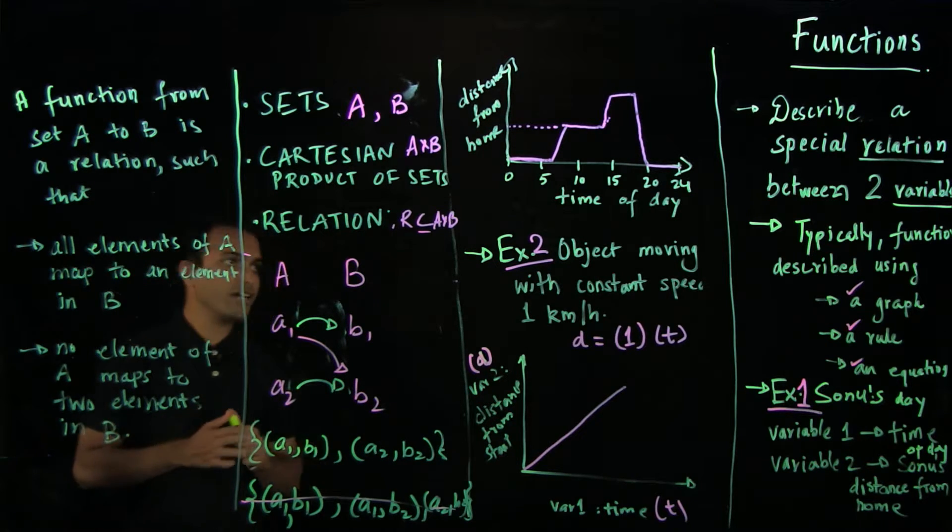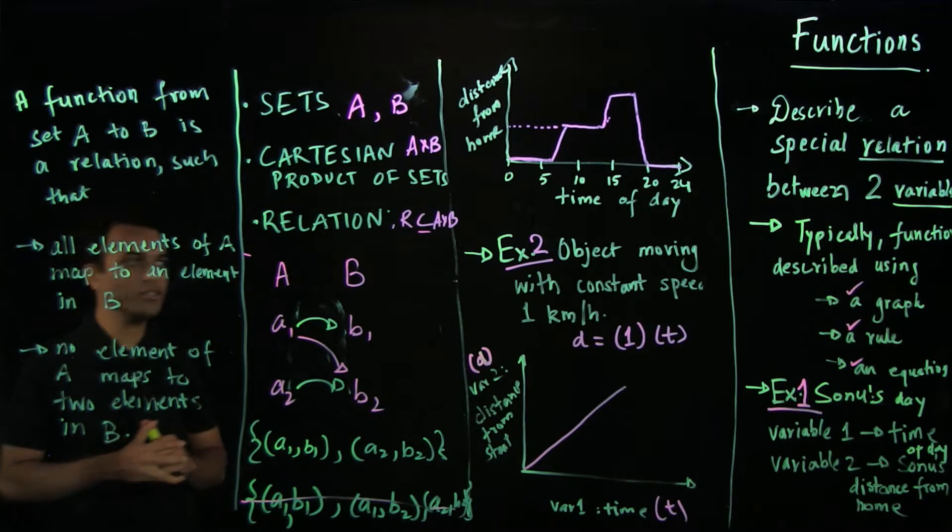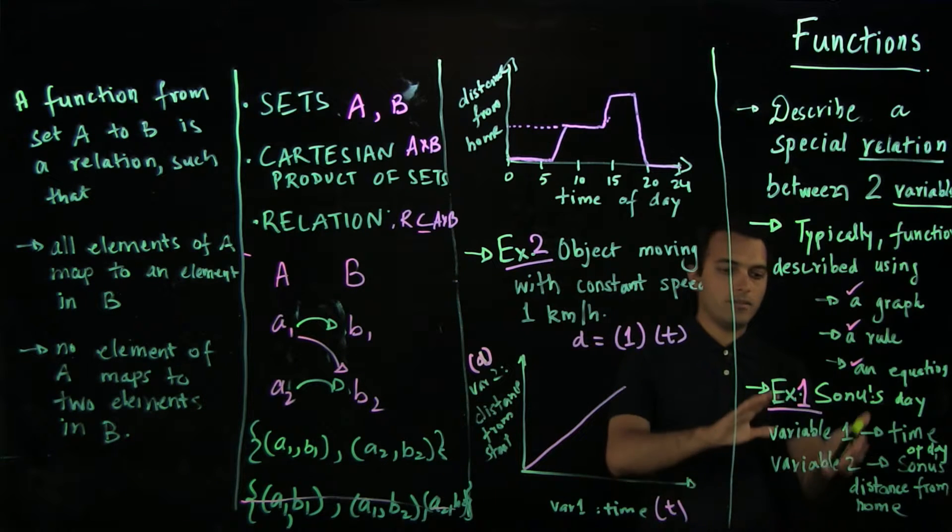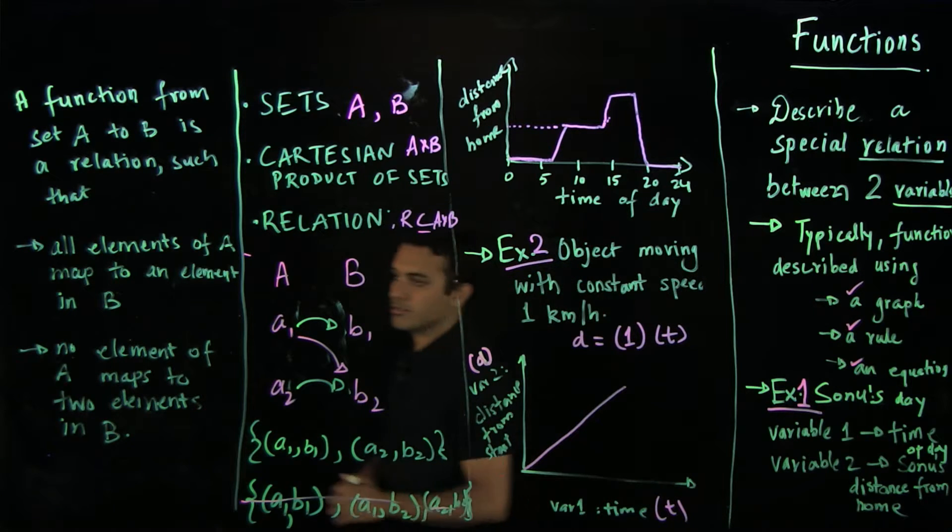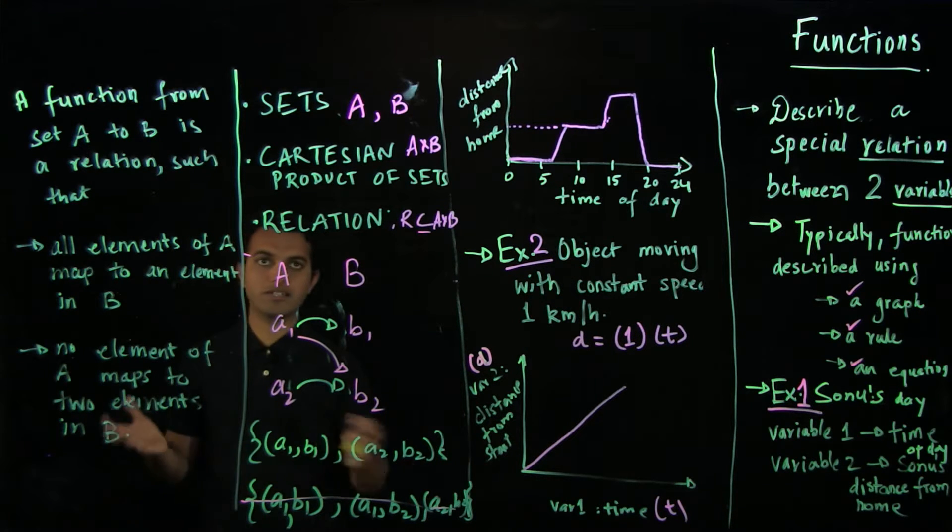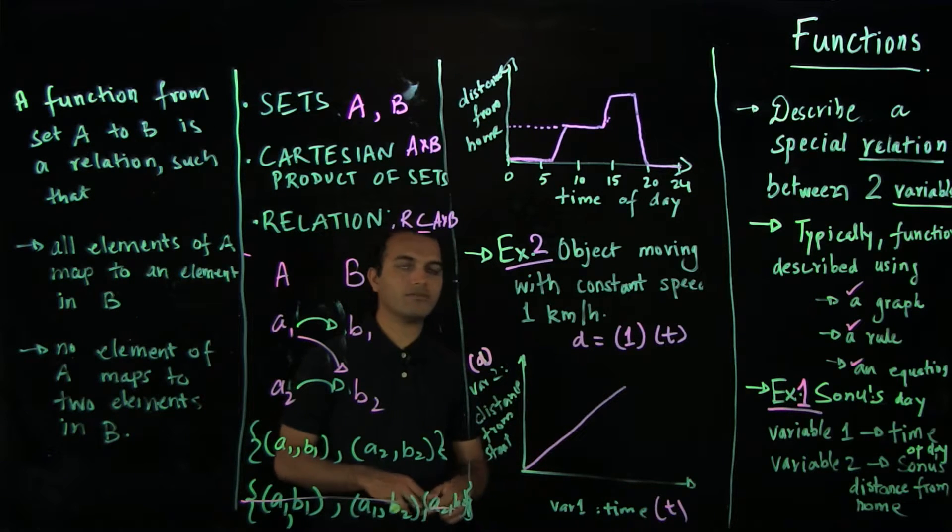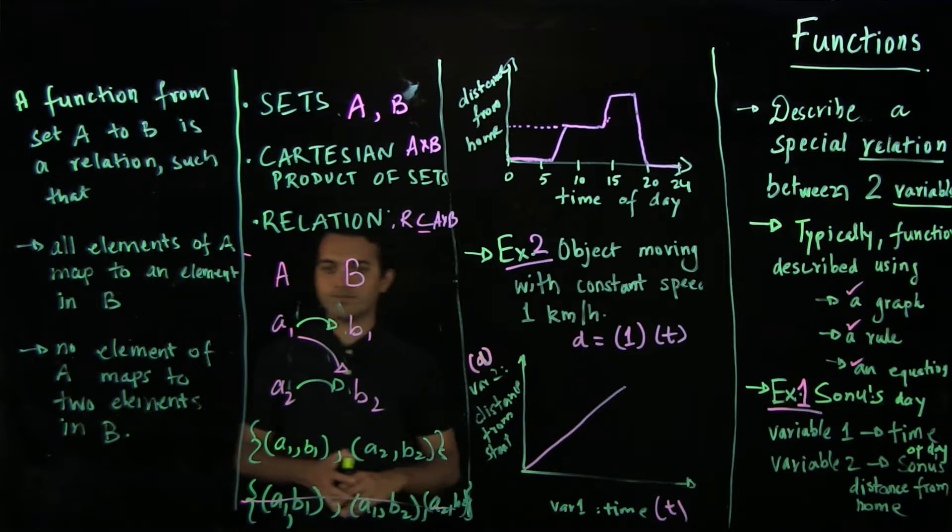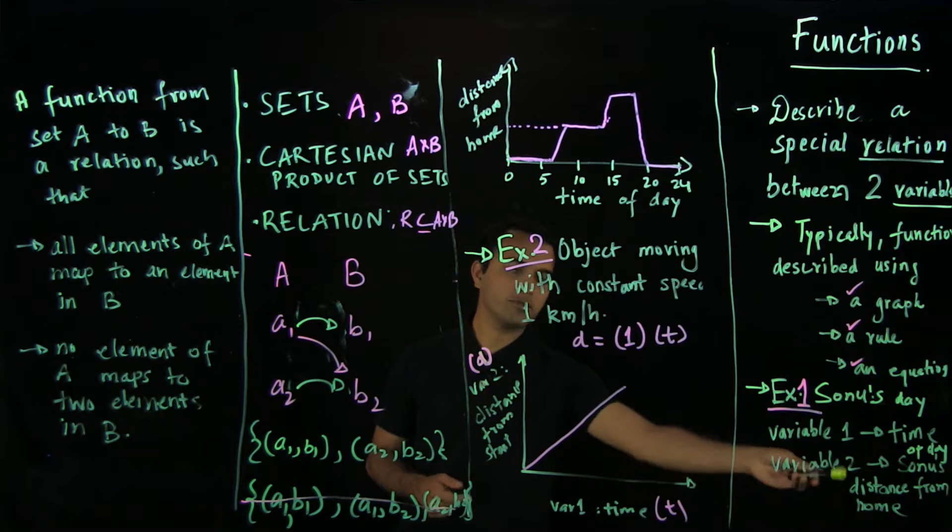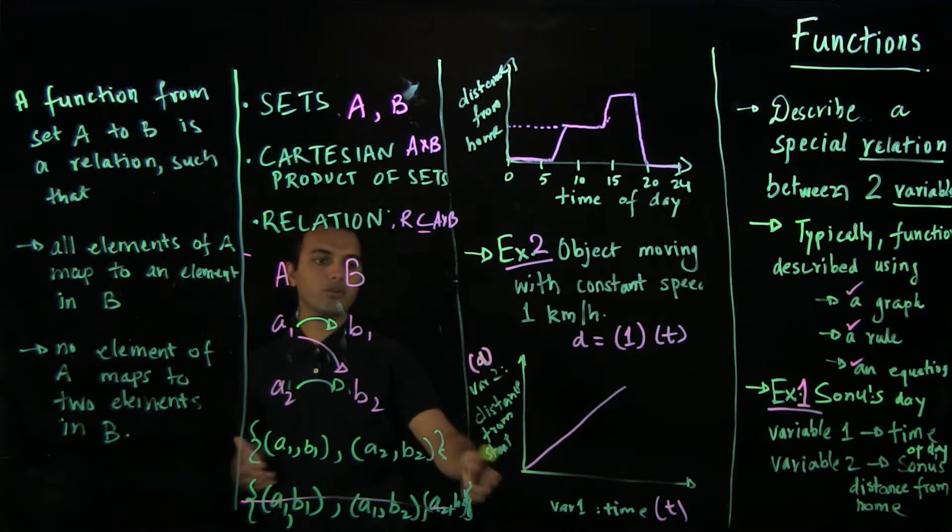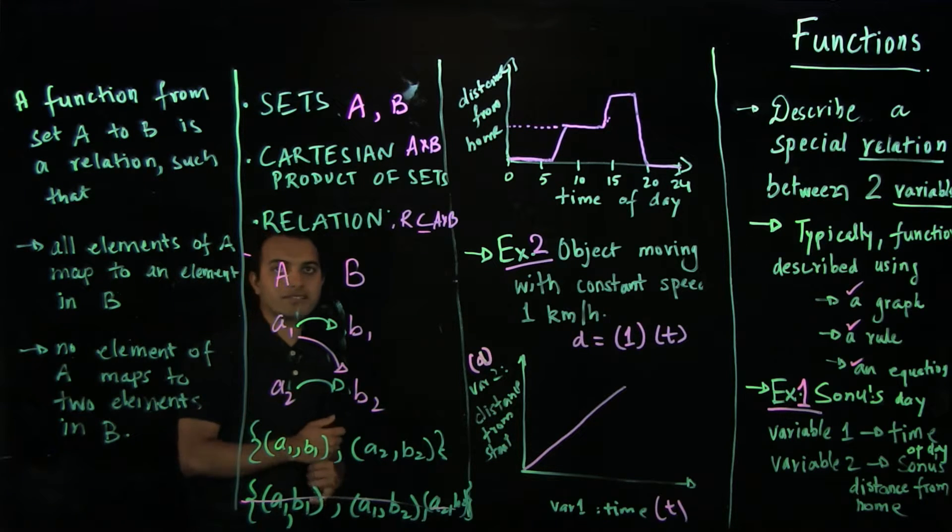Just to recap, the examples that we saw, and how this really relates to the examples that we had seen before. So in example one, our set A is given by the time, the time of the day. So it includes, it's a continuous set from 0 to 24. And distance from time is a continuous set from 0 to infinity. So these are the set of input variable, variable one, and set of output variable, variable two. And similarly, you can figure out what's the set A and B in example two.